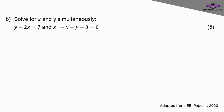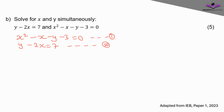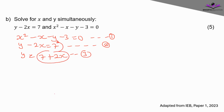Question 1b is simultaneous equations. We have two equations: equation 1 is x² − x − y − 3 = 0, and equation 2 is y − 2x = 7. We'll use substitution — isolate y from equation 2 to get y = 7 + 2x as equation 3. Substituting into equation 1, we replace y with (7 + 2x), giving x² − x − (7 + 2x) − 3 = 0.